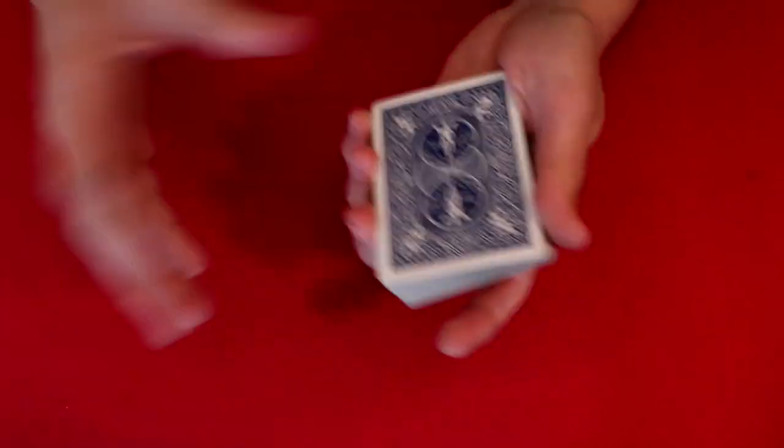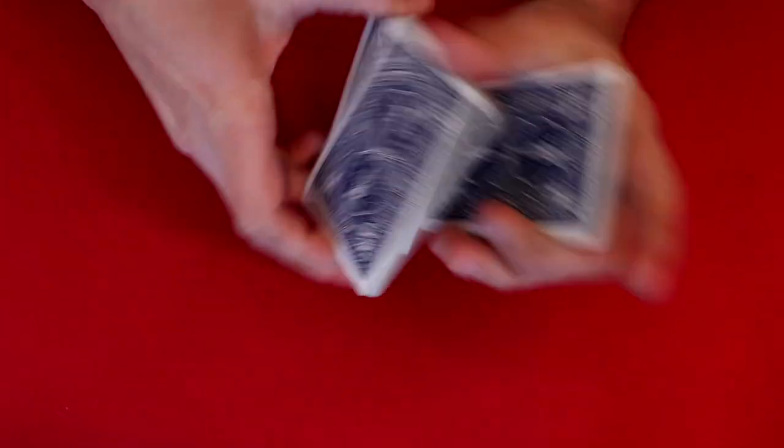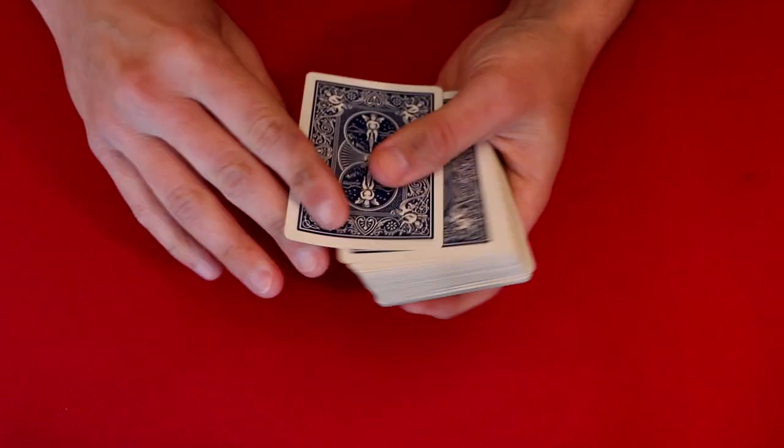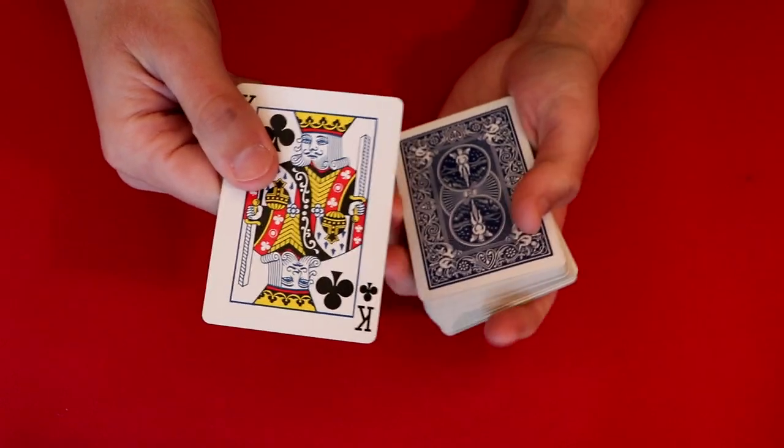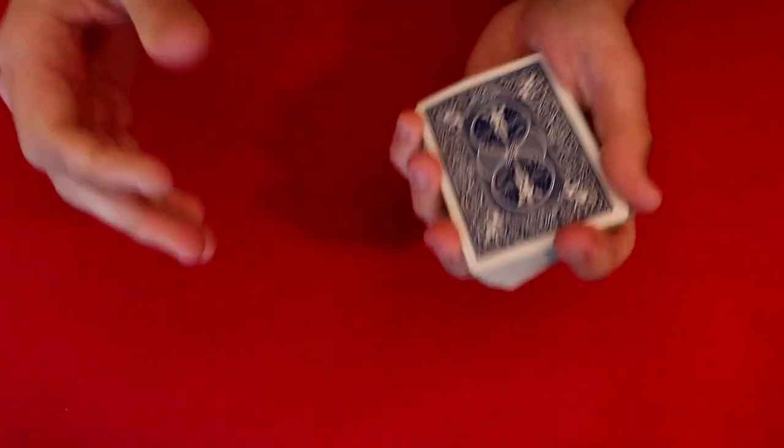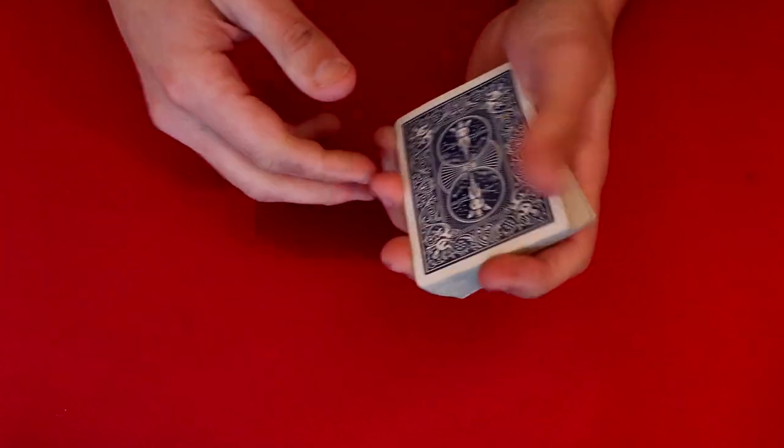So once it's there, you can do a false cut just to make it look like you're doing something fancy when you're really doing nothing. The card is going to stay on top. And you can say, I think I've found your card. All right. So at this point, you do a double lift.